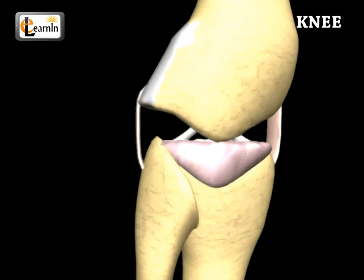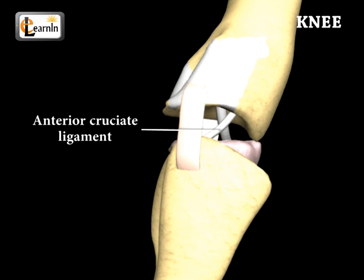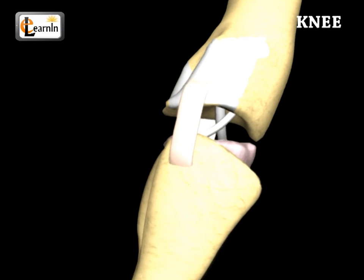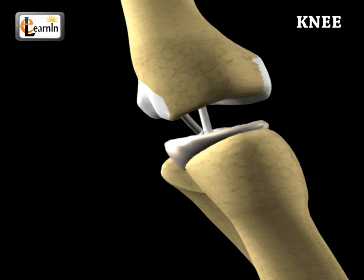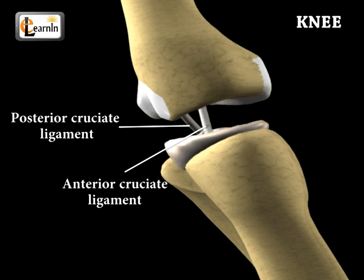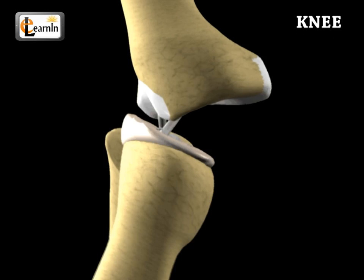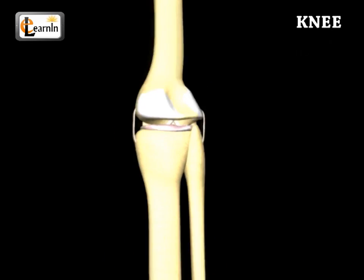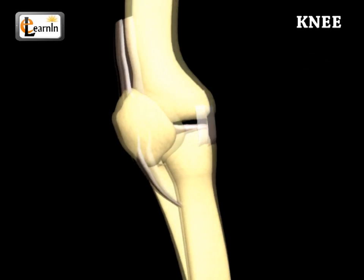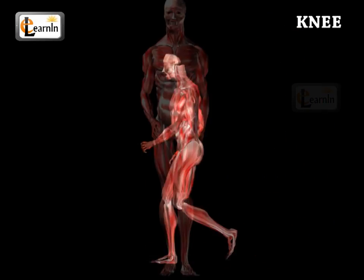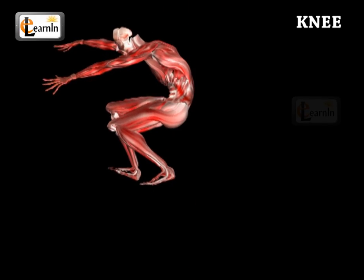It is the anterior cruciate ligament that connects the tibia, the shin bone, to the femur, the thigh bone, and is at the center of the knee. This limits the forward and rotational movements of the tibia. The knee also has a posterior cruciate ligament, located just behind the anterior cruciate ligament, that limits the backward motion of the tibia. These two, the anterior and posterior cruciate ligaments, together with the muscles, manage the amount of stress applied on the knee while walking, running, jumping, and so on.